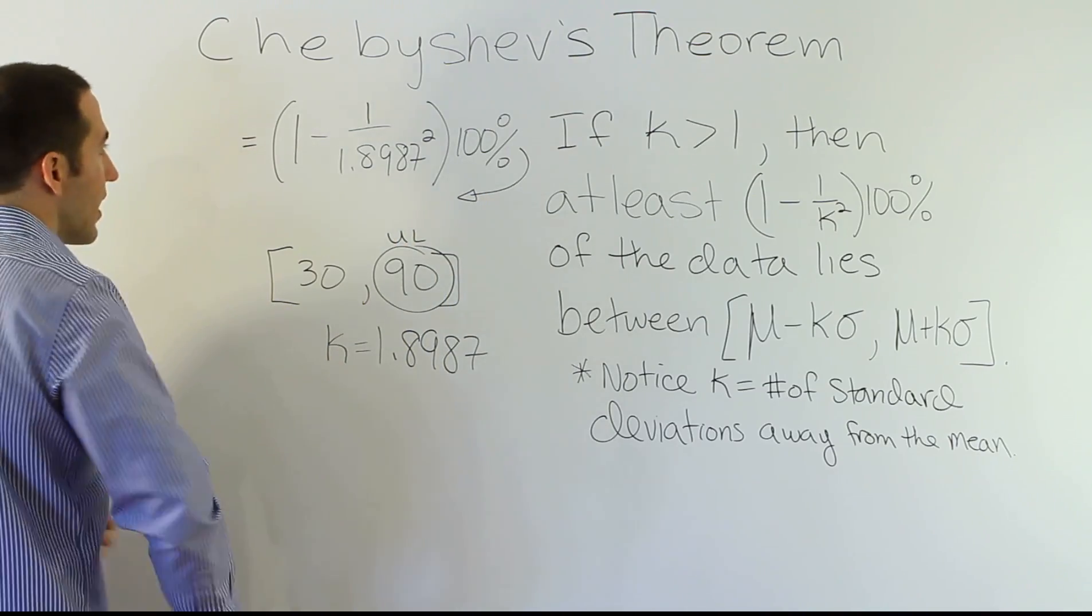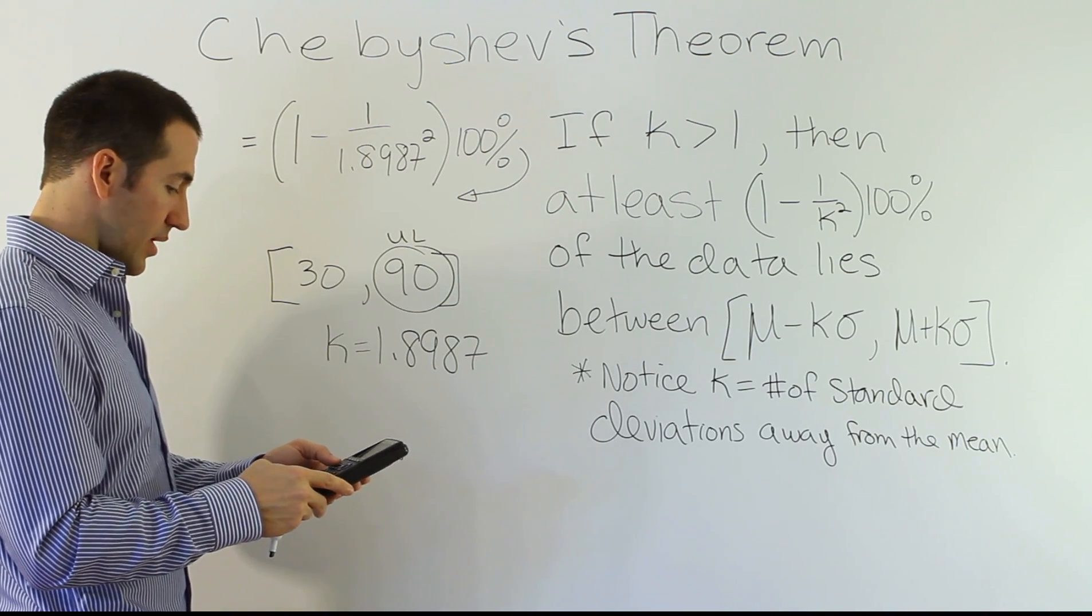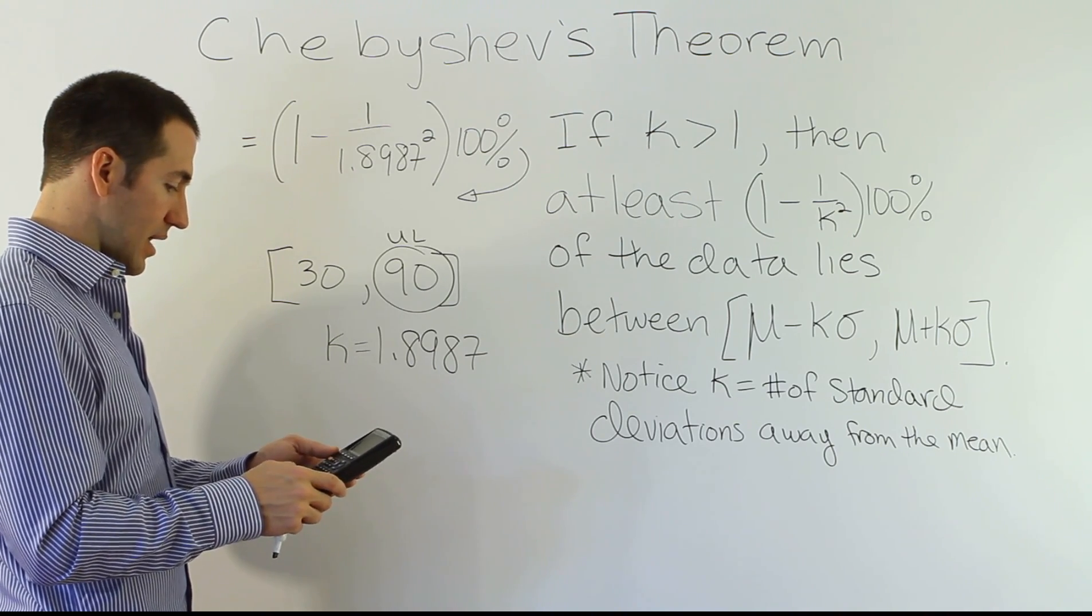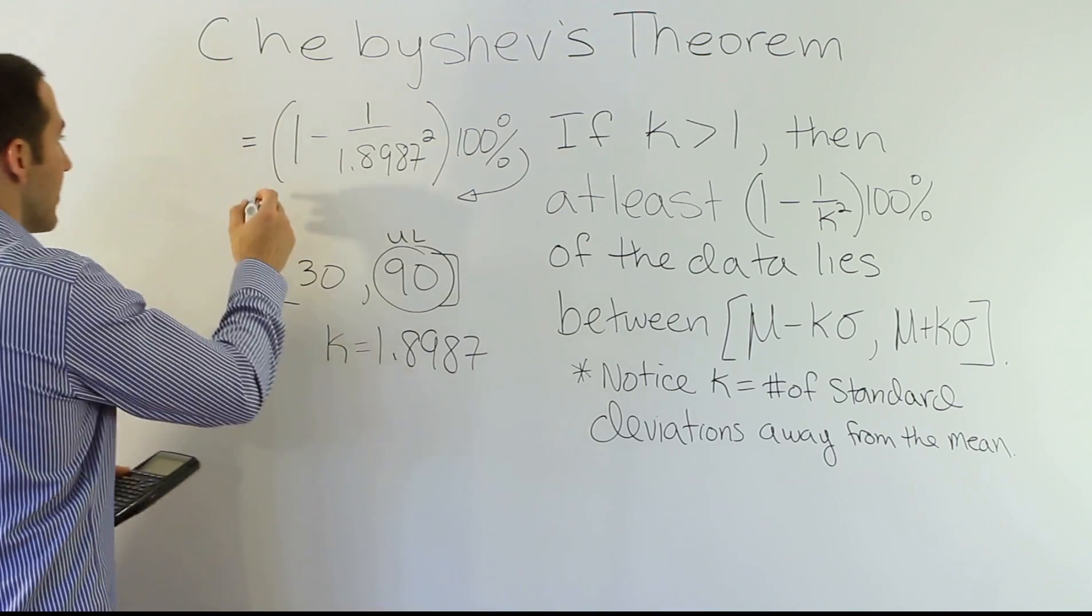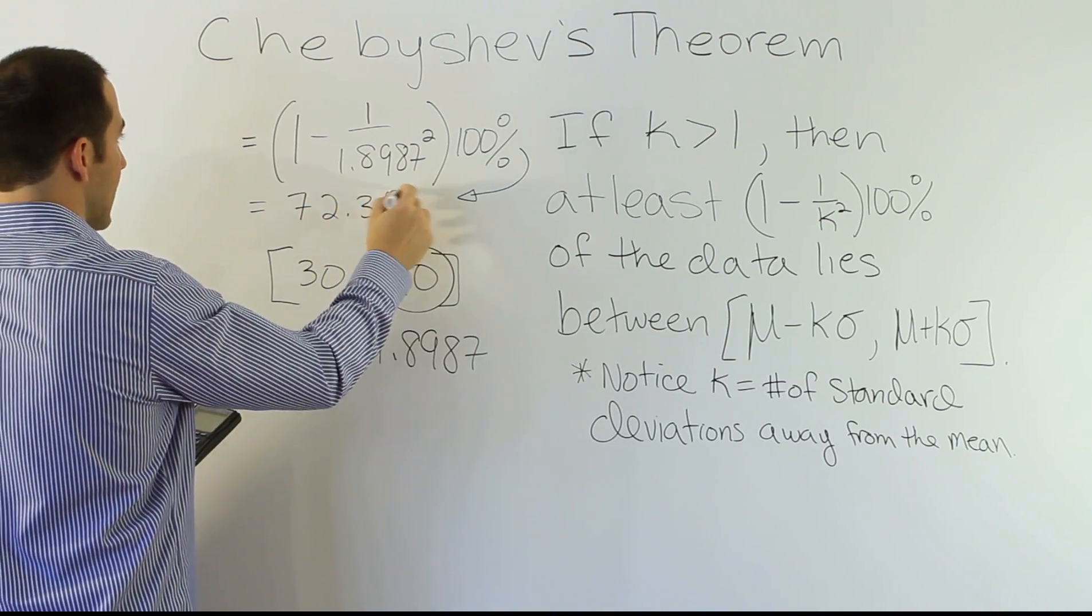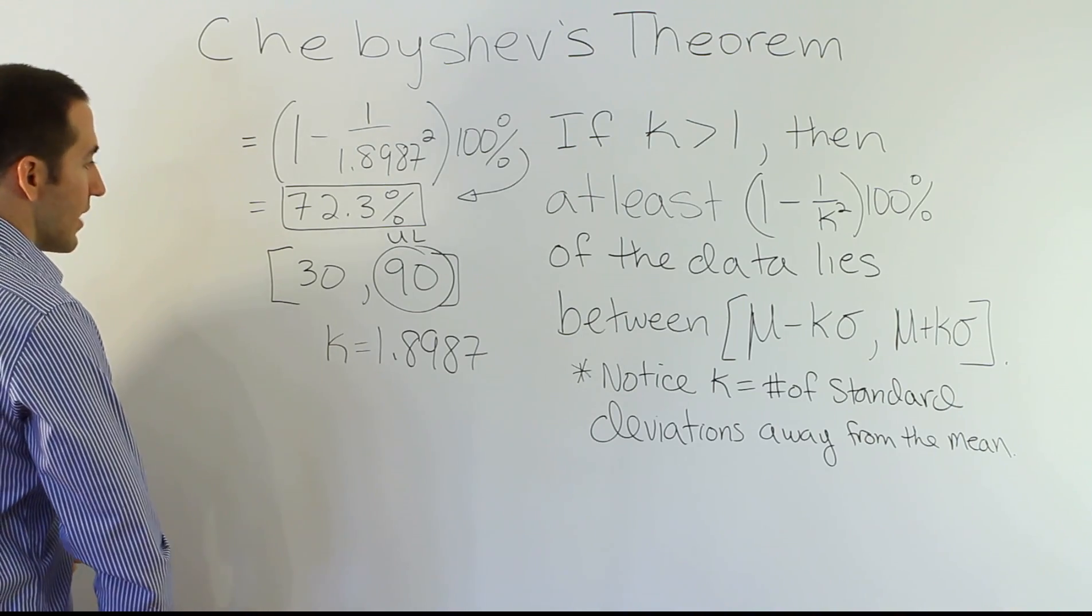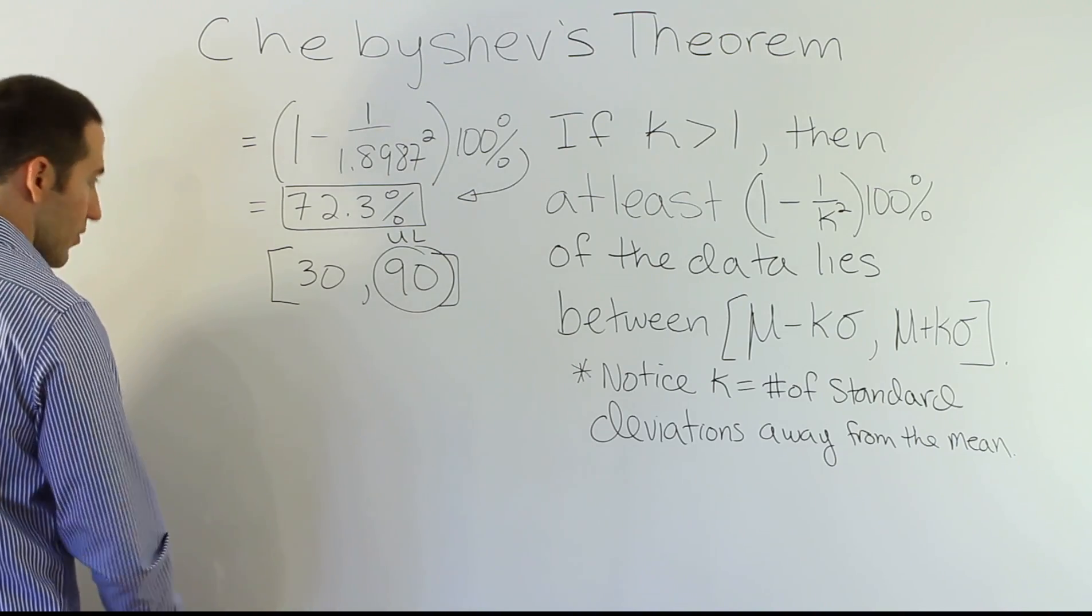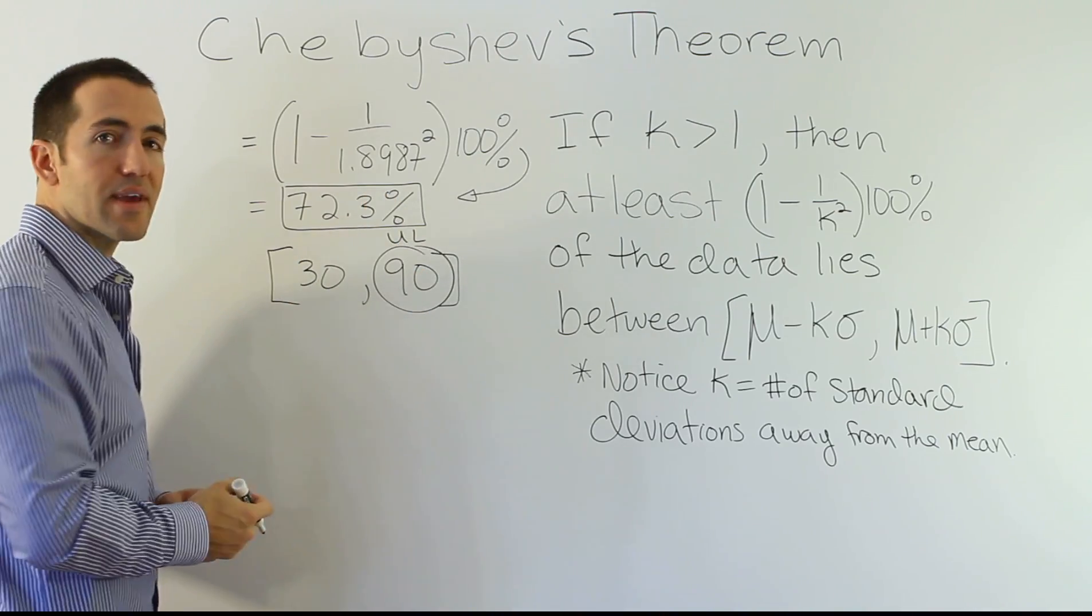So, we're going to say that 1 minus 1 over 1.8987 squared times 100% is the minimum percentage inside this interval from 30 to 90. So, let's see what this works out to be. So, when I work that out, I'll have 1 minus 1 divided by 1.8987 quantity squared. Then, multiplying by 100, I get the answer 72.3%.